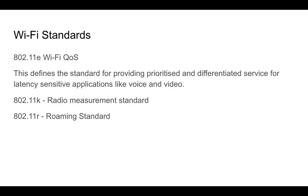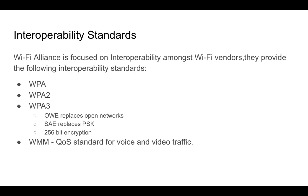Another standard is 802.11e, or Wi-Fi QoS, which provides differentiated service for latency-sensitive applications like voice and video. Other standards include 802.11k, the radio measurement standard, and 802.11r, the roaming standard — we'll talk about those in subsequent slides. Wi-Fi Alliance provides several interoperability standards including WPA, WPA2, and WPA3, as well as WMM, the QoS standard for voice and video traffic.